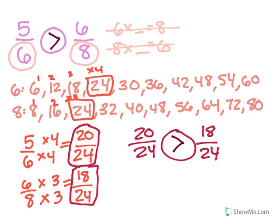So for strategy number 3, I check to see if strategy number 1 will work. If it doesn't, I move on, and then I can pick to do strategy number 2 or 3. Number 2 is when I would multiply 5 sixths by 8 and 6 eighths by 6. And number 3 is when I find the common multiple and try to find the smallest one, and I multiply the fraction to get there — because I want to make my denominators the same.